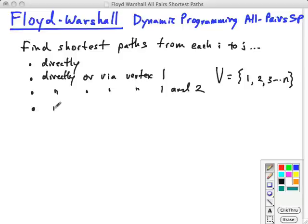And then it'll find shortest paths that are either direct or via vertex one and two and three, and so on. And then up through shortest paths that go either directly or via vertices one, two, dot dot dot, up to k, or let's say k minus one for the next step we're about to take.